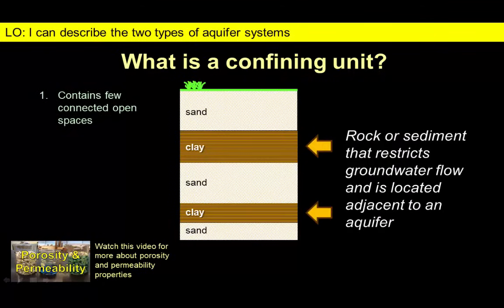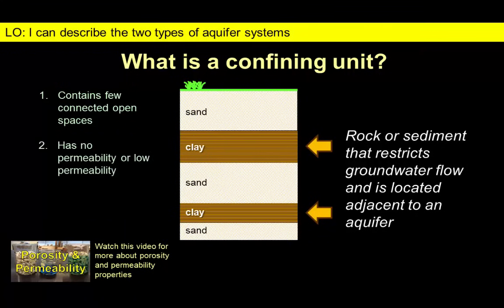The opposite of an aquifer is a confining unit. Materials such as clay have poor porosity and/or permeability and will restrict or prevent the flow of groundwater. Layers of clay, shale, or other low-permeability materials act as a barrier for groundwater flow and may separate aquifer systems. Water may still pass through these layers, but much more slowly than through the aquifer.